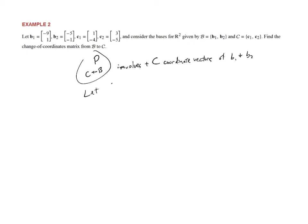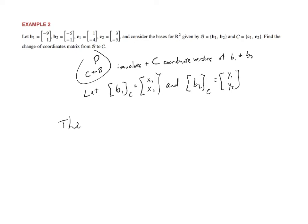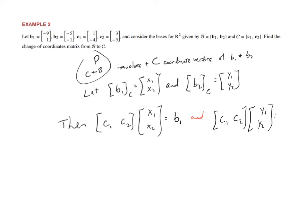Let's say b1's coordinate vector relative to c equals some unknown (x1, x2), and b2 relative to c is (y1, y2). Then the matrix [c1 | c2] times (x1, x2) should equal b1, and [c1 | c2] times (y1, y2) should equal b2. This is essentially what we did in example one, but reversed — in example one I knew those coordinates and produced the answer; here we're finding them.